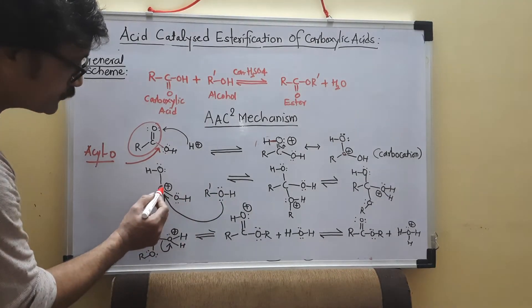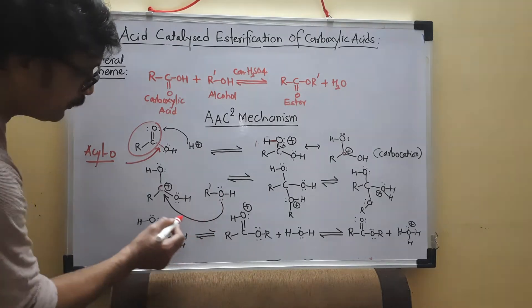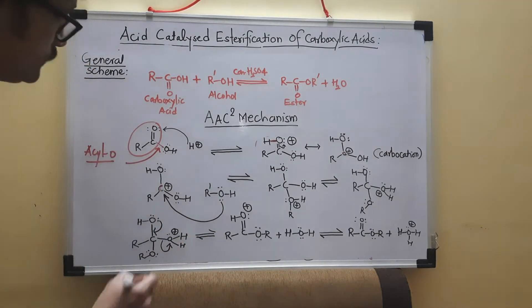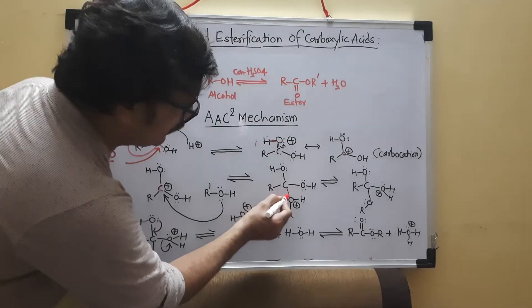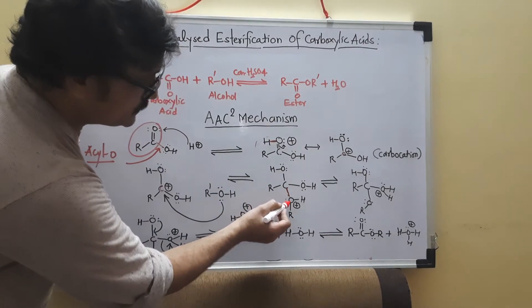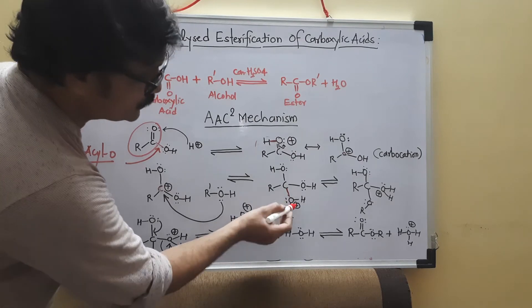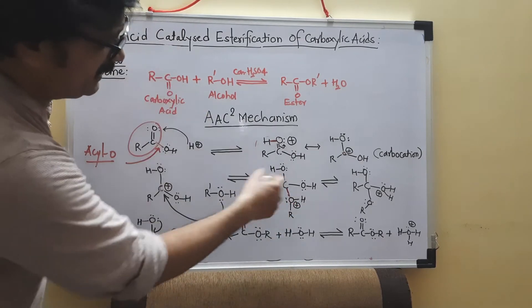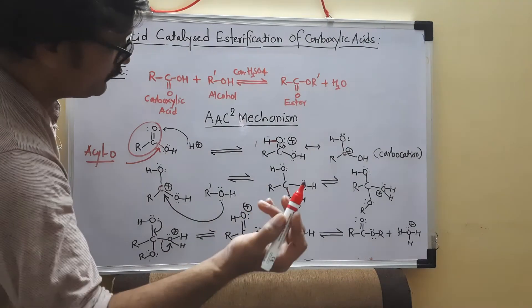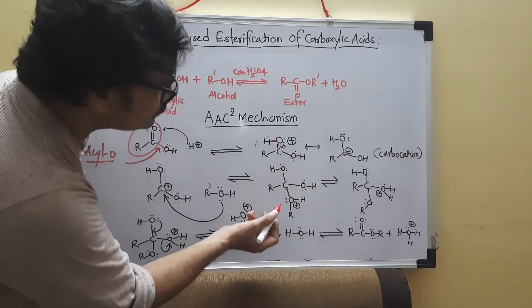Now, there is attraction between positive electron deficient center and the electron rich center. So that pair is provided to this carbon to form a bond. So this bond is formed. One pair is utilized. One lone pair of electron is less. So the positive charge is developed. You can calculate by using our formal charge determination concept.